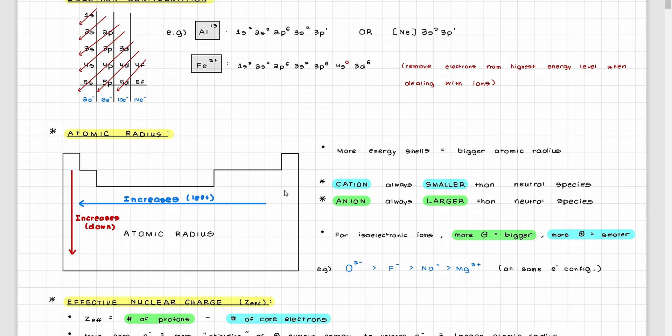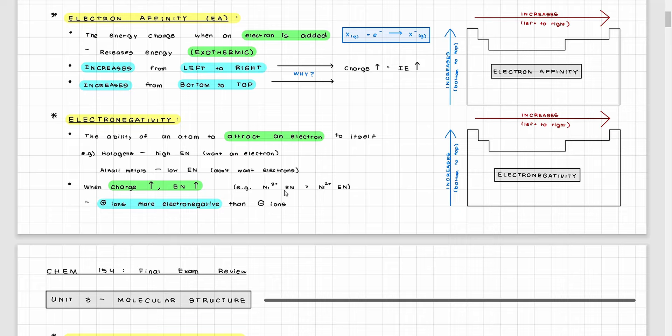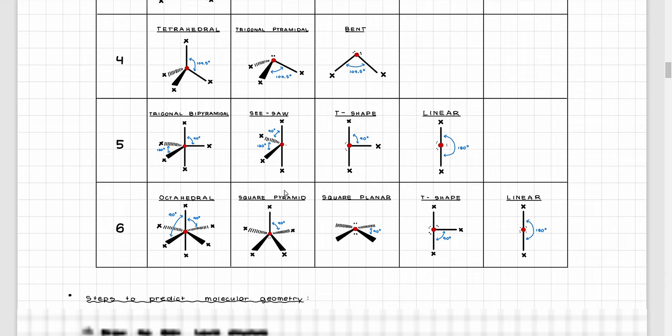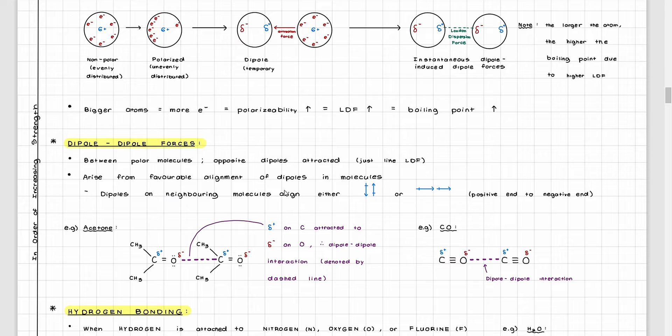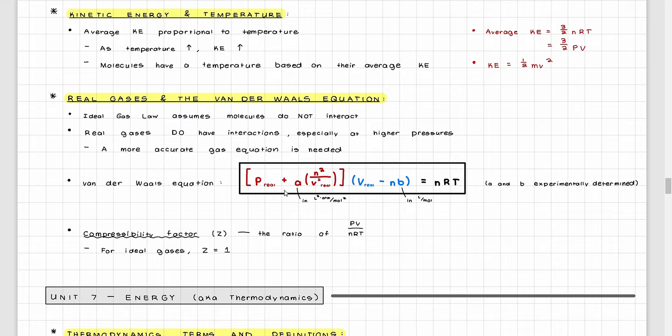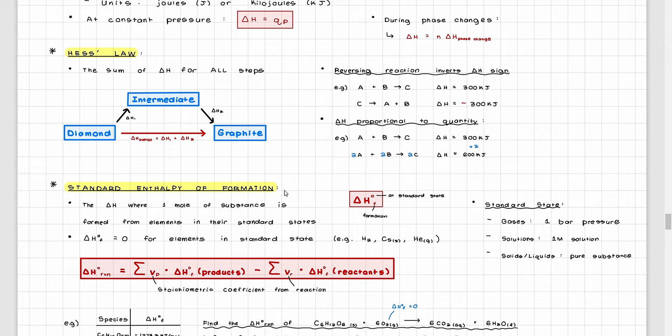Now let's move on to what you're actually going to learn in CHEM 154. There will be 13 weeks in the term and each week will focus on a specific topic. The first 7 weeks will be dedicated to chemical bonding and matter, covering concepts such as the periodic table, Lewis structures, VSEPR theory, intermolecular forces, phases of matter, and polymers. There is quite a lot of overlap between the last 6 weeks of concepts and those taught in Physics 157.